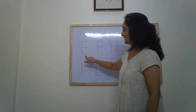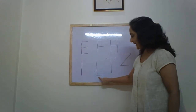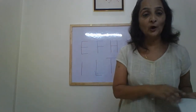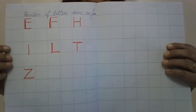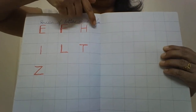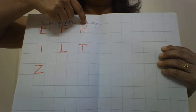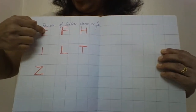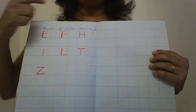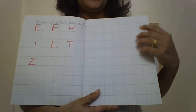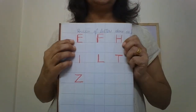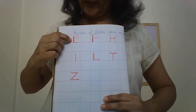Alright children, so letters E, F, H, I, L, T, and Z. Now I will show you how to write them in the notebook. Write the date. Write the topic: Revision of letters done so far. Now remember, letters are written horizontally in a sleeping line format, while numbers are written vertically.